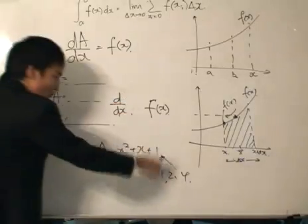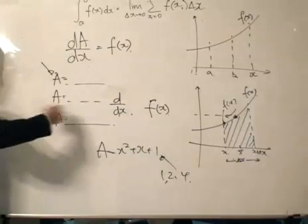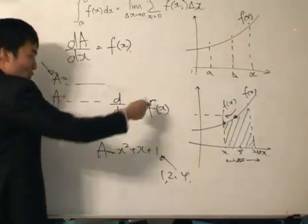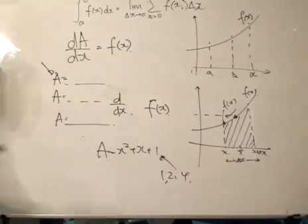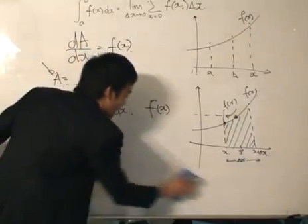Because when we differentiate, we can get function f(x). There can be another A, we differentiate that, we also get function f(x). So A is one of the anti-derivatives of function f(x).